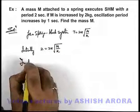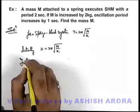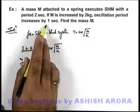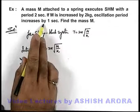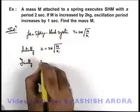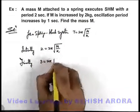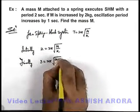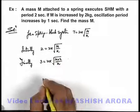Finally, time period is increased by 1 second, meaning it becomes 3 seconds, and mass is increased by 2 kilograms. We can write 3 = 2π√(M+2/k). This is the final situation.